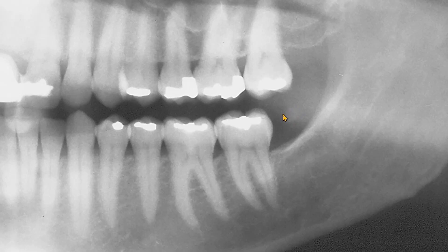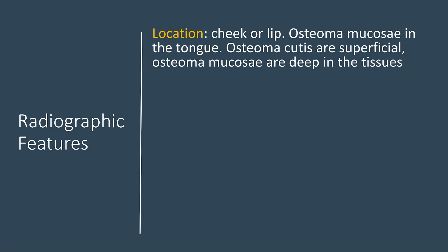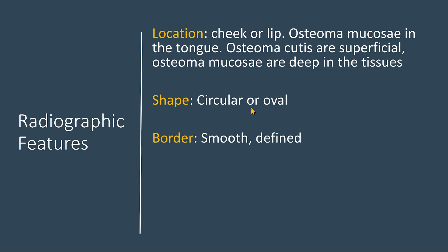So, what are the features of an osteoma cutis? Most commonly, the osteoma cutis is in the cheek or on the lip. It can also be in the tongue. An osteoma in the tongue is called osteoma mucosa. The cutis are more superficial while the mucosal osteoma are deep in the tissues. As we saw, the shape of the mass is circular or oval. The border is smooth, well-defined, and thick. The size varies — it can be very small or up to one or even two centimeters.